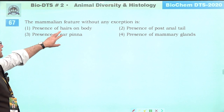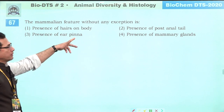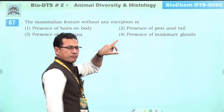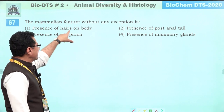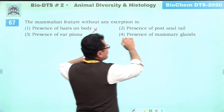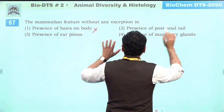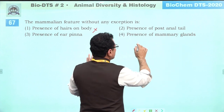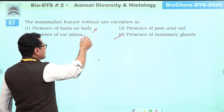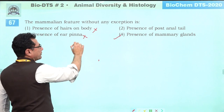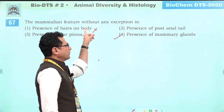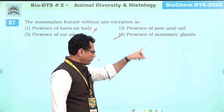The mammalian feature without any exception: hairs are absent in some aquatic mammals. Post-anal tail is not present in all. Presence of mammary glands is found in all mammals — this is universal. Ear pinna is absent in some aquatic mammals. Answer is four: mammary glands (without exception).